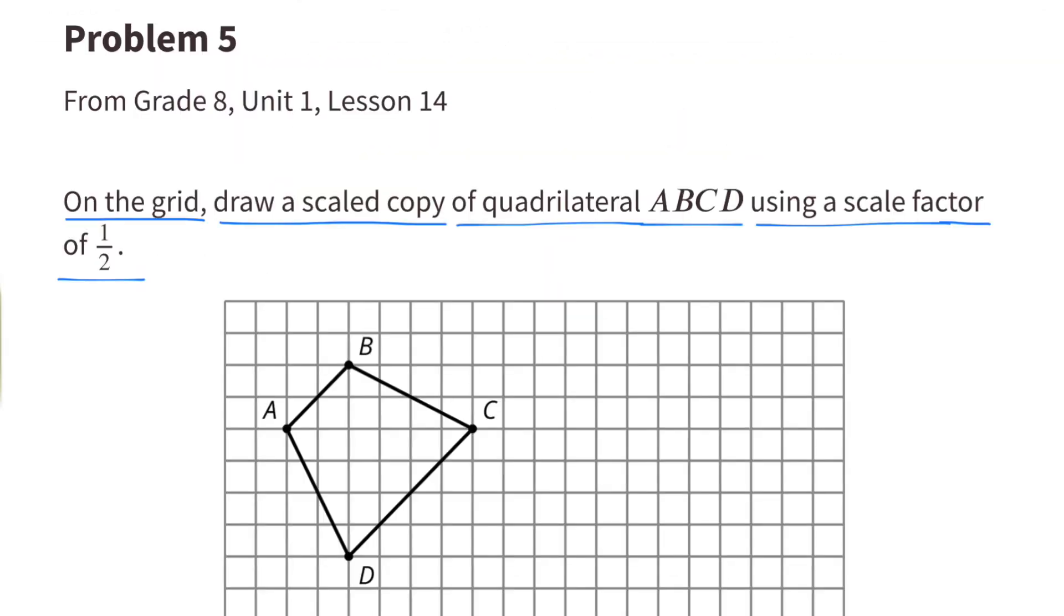Number 5. On the grid, draw a scaled copy of quadrilateral ABCD using a scale factor of one half.